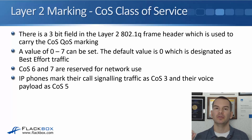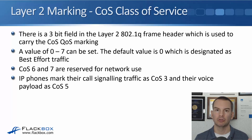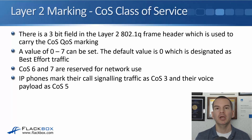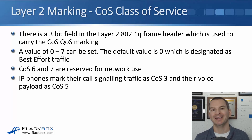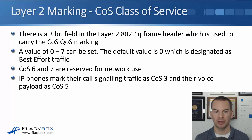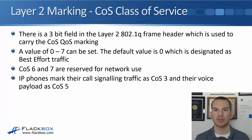With CoS, the higher the number the more important the traffic. IP phones mark their call signalling traffic as CoS 3. Call signalling is used for setting up and tearing down a call. The voice payload — the actual spoken voice — is marked as CoS 5, because the spoken voice is more important than the call signalling.